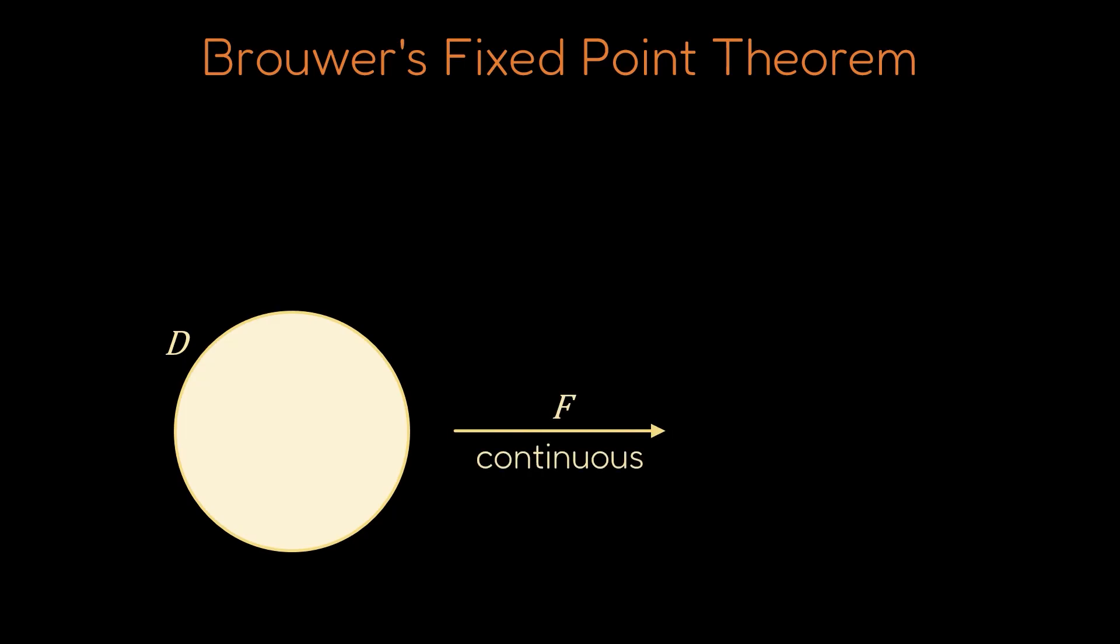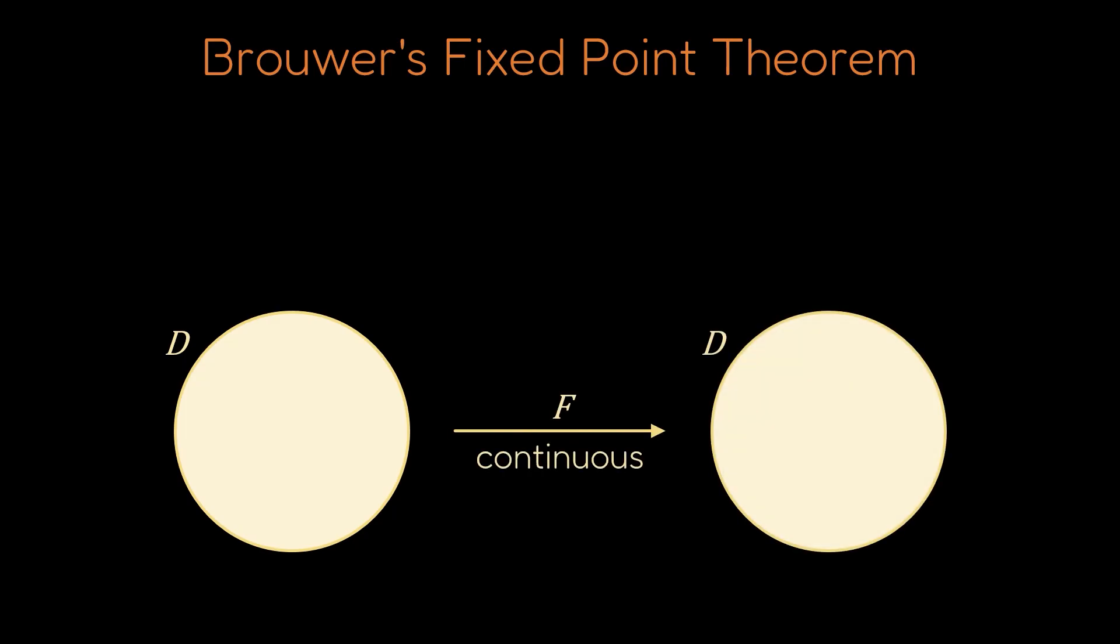We are now ready to formalize the problem. We have a continuous function from the disk to itself, and we want to show that there exists at least one point that maps to itself. A point for which F coincides with P.